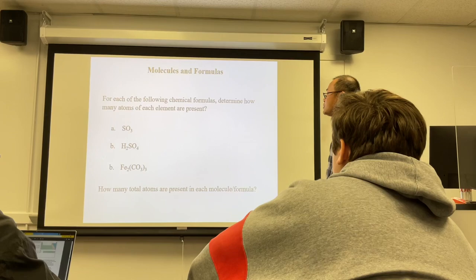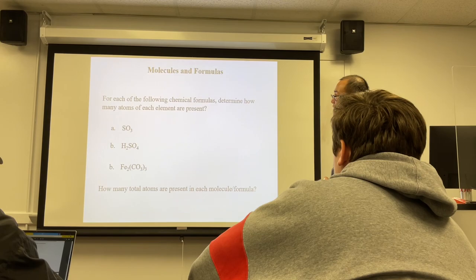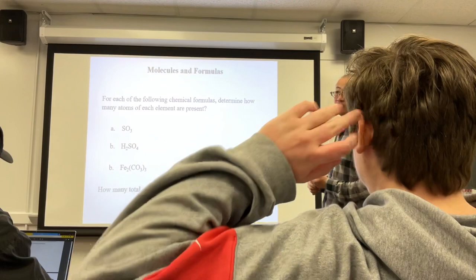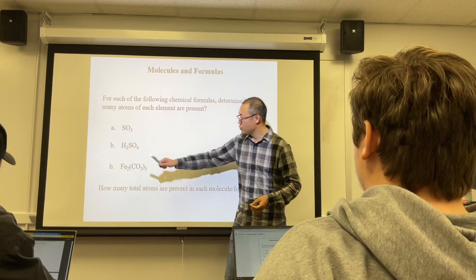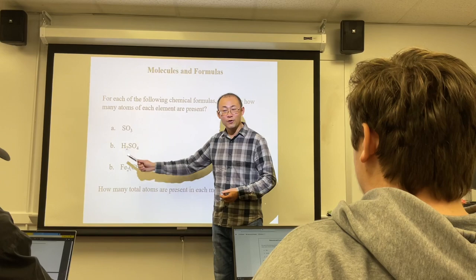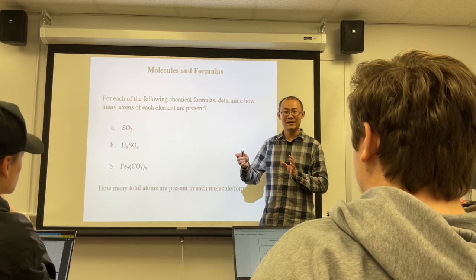Here are three examples showing formulas. For SO₃ (sulfur trioxide): one sulfur, three oxygen — four atoms total. For H₂SO₄: two hydrogen, one sulfur, four oxygen — seven atoms total. For Fe₂(CO₃)₃ (iron(III) carbonate): two iron, and the subscript 3 outside the parenthesis means three of everything inside. So three carbons and nine oxygens — fourteen atoms total.